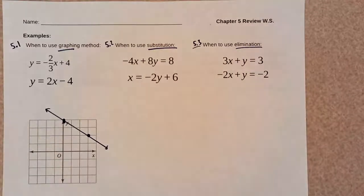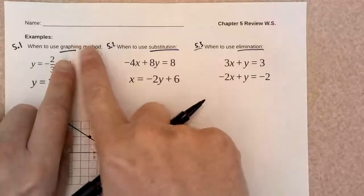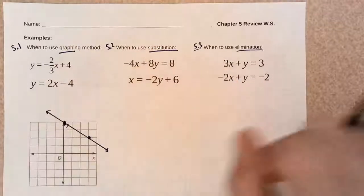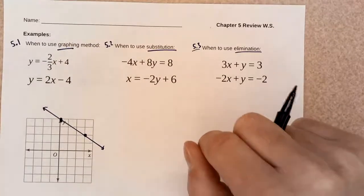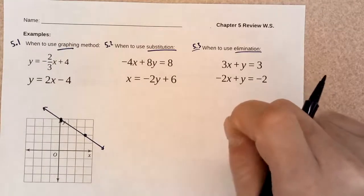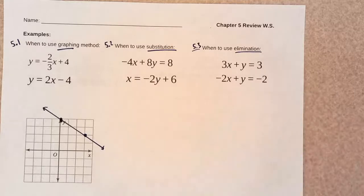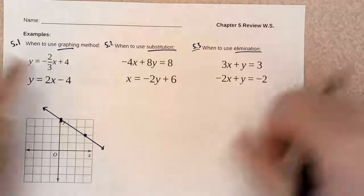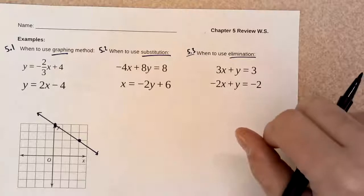Each of these methods works better depending on the type of systems of equations that you have. And by the way, on your chapter 5 quiz, to get an A, you have to be able to do all three methods.